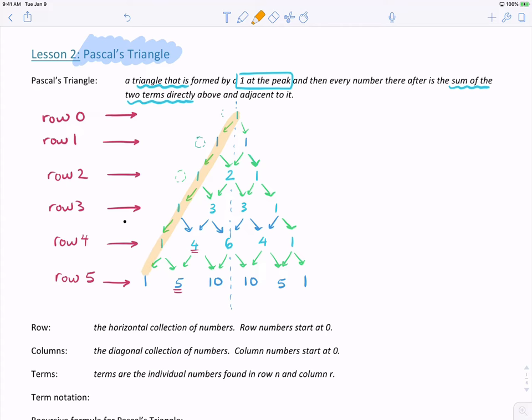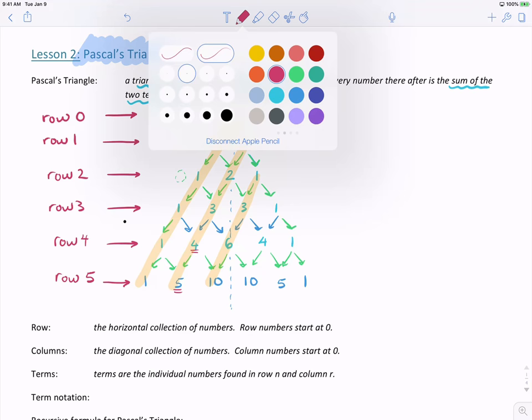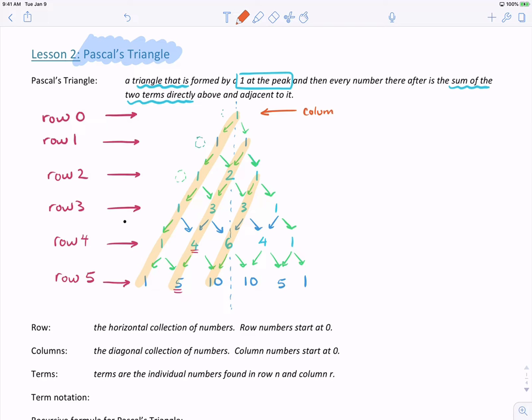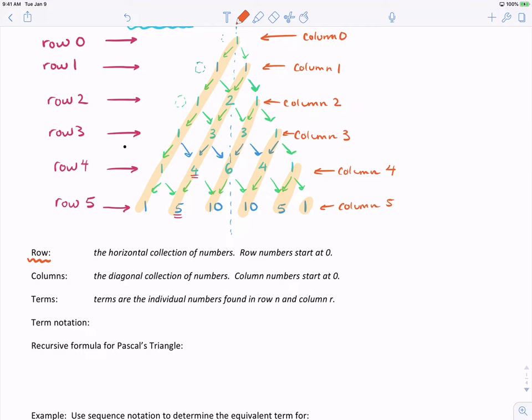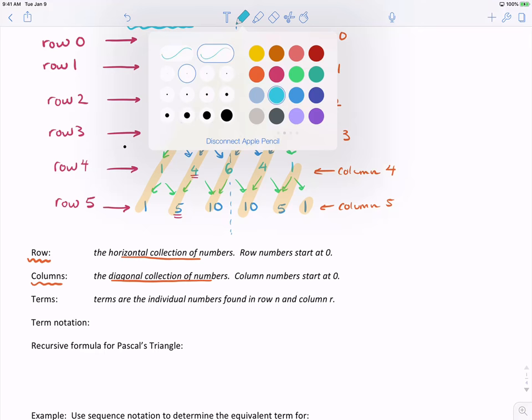The second is to talk about these diagonal lines as columns. Starting at the left-hand side, the top column, just like our rows, is called column 0. This makes this column 1, column 2, and we would continue depending on where we're looking. So here's our definitions below. We said that a row was the horizontal collection of numbers, and our columns are our diagonals, or the diagonal collections of numbers.